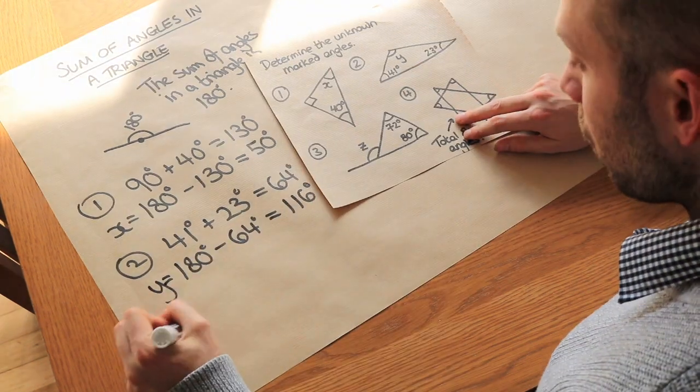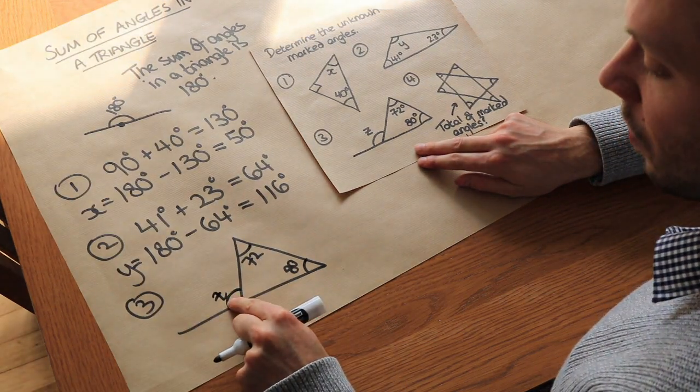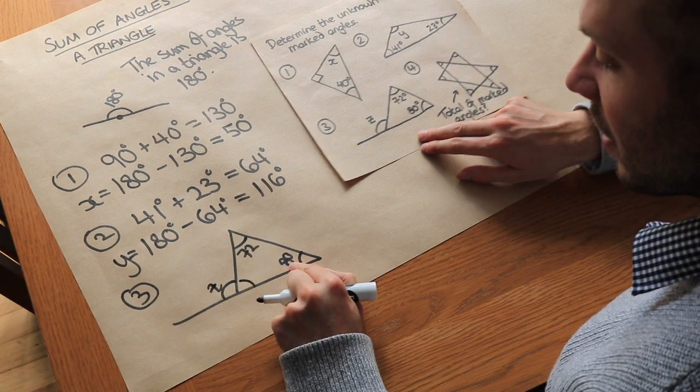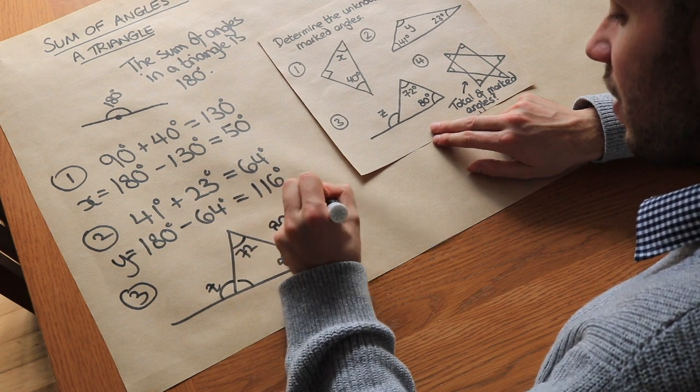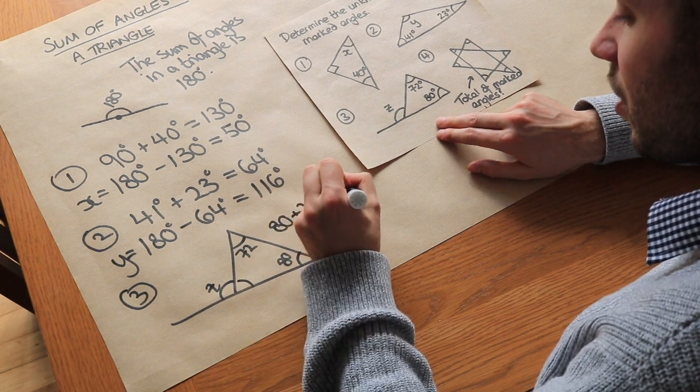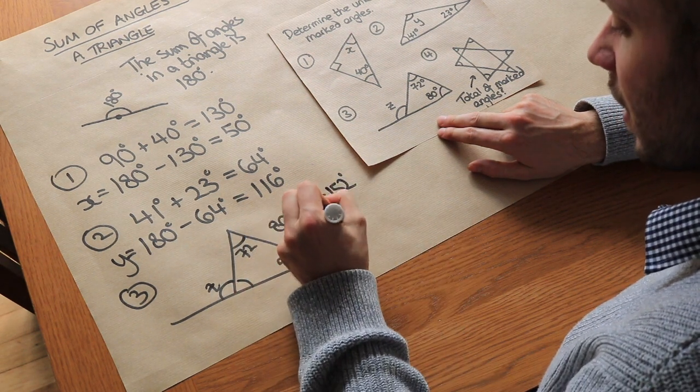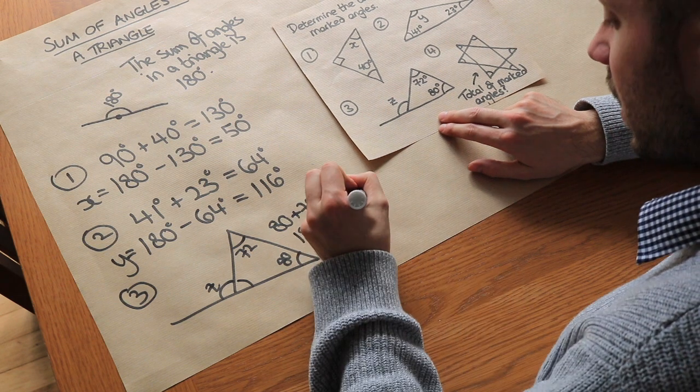What about the third one? Well this is a bit harder this time. To get this angle z we first need to find this angle here. So if we just add those together we've got 80 plus 72 is equal to 152 degrees and therefore this remaining angle must be 180 minus 152 which is equal to 28 degrees.